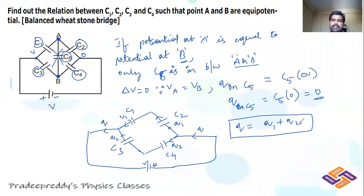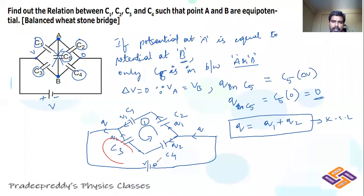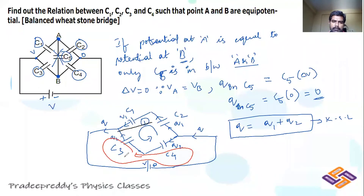Q = Q1 + Q2 is the net charge transferred by the battery — charge over C1 plus charge over C3. This is KCL. You can also use KVL for closed loops: from the battery, through C1-C2, or through C3-C4, or even the outer loop. You can use KVL over any of those loops.